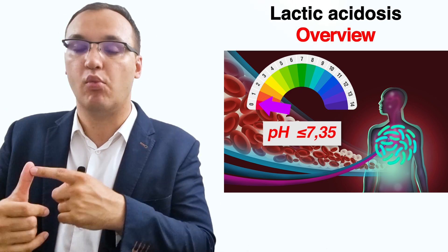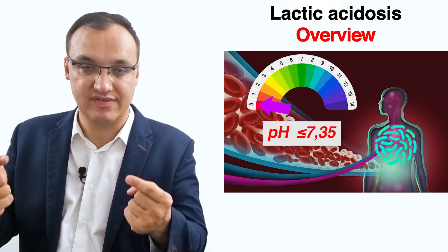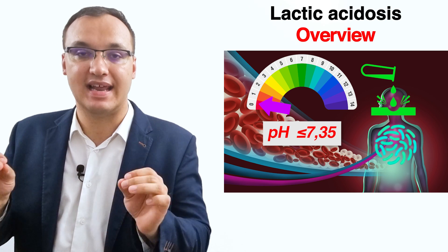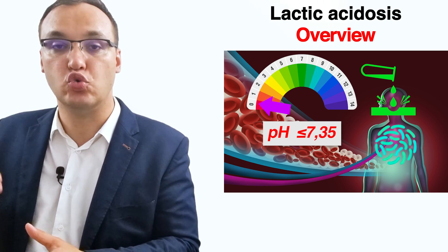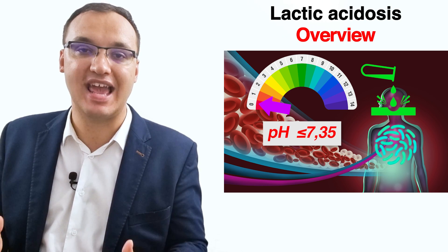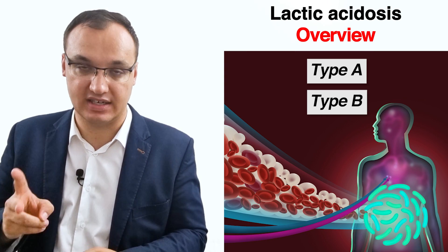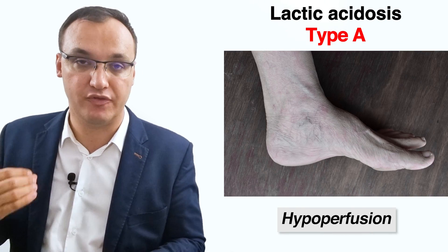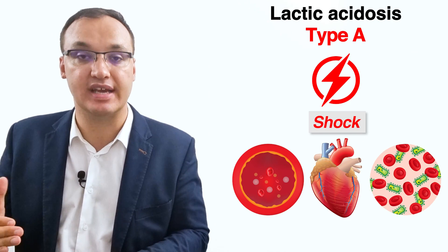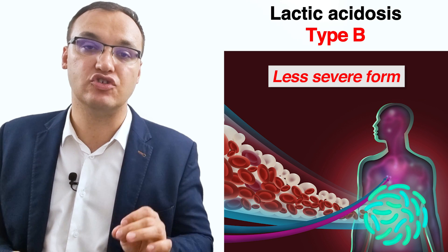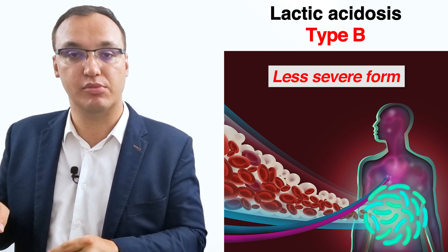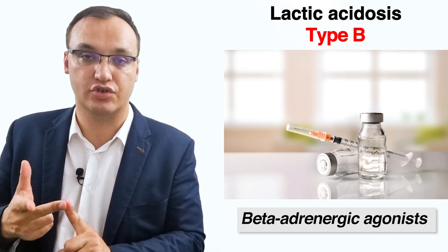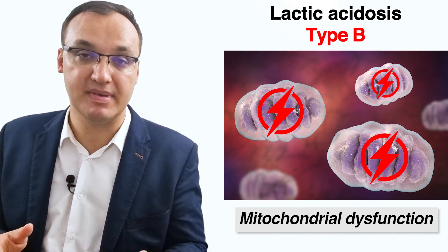In summary, acidosis is a state in the body with a pH of less than 7.35, caused by an overproduction of acid. In lactic acidosis, lactic acid accumulates when a person produces too much or underutilizes lactic acid without the body being able to adjust. There are two main types: type A, which is more severe because it is caused by hypoperfusion due to shock — hypovolemic, cardiogenic, or septic — and type B, which occurs when there is normal tissue perfusion but other reasons cause lactic acidosis. Causes of type B include diabetes mellitus, chronic alcoholism, beta-adrenergic agonists, malignancy, HIV infection, and mitochondrial dysfunction — both inherited and induced by medications.